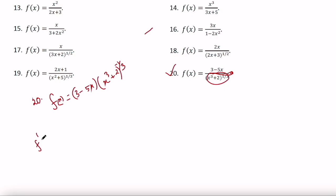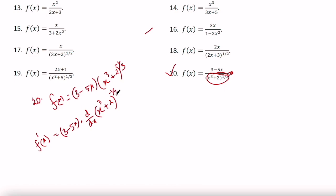So f prime x equals (3 minus 5x) into the derivative of (x cubed plus 2) to the power minus 1 by 3, plus (x cubed plus 2) to the power minus 1 by 3 into the derivative of (3 minus 5x).